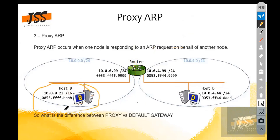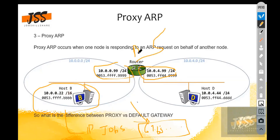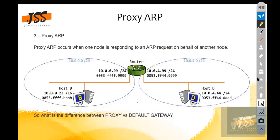If we talk about the default gateway, that is a different story. When this device wants to communicate with an external address — say jobskillshare.org, which has a public IP like 67.65.whatever — the request goes to the router, the router looks into its routing table, sees it's connected to the local LAN segments but has no idea about that 67.x address, so the default gateway comes into play to reach the external destination. This is the clear difference between default gateway and Proxy ARP.